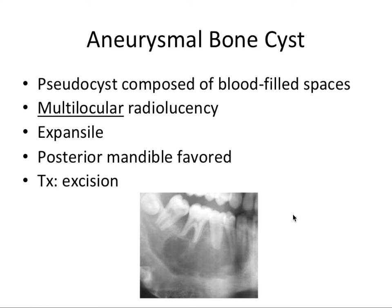Next we have the aneurysmal bone cyst, or ABC for short, and this is a pseudocyst composed of blood-filled spaces. It's important we say pseudocyst because this is not a true cyst — it's not lined by an epithelium. This one is a multi-locular radiolucency with multiple pockets within it, and it is expansile. As you can make out from the radiograph, the mandible has expanded significantly. In contrast to the CGCG, it favors the posterior mandible. Treatment is excision.